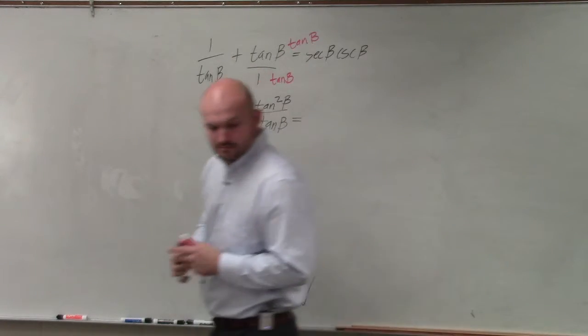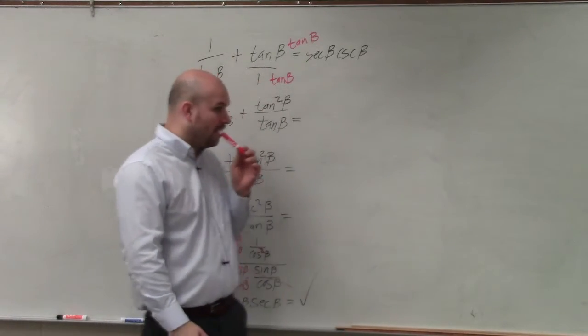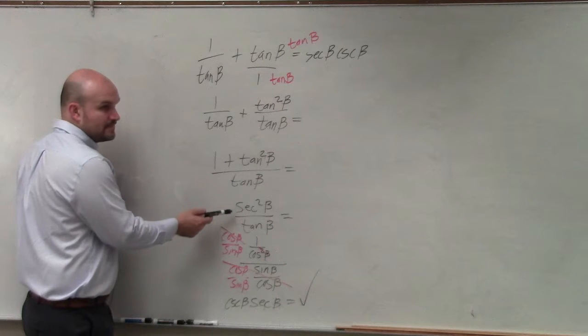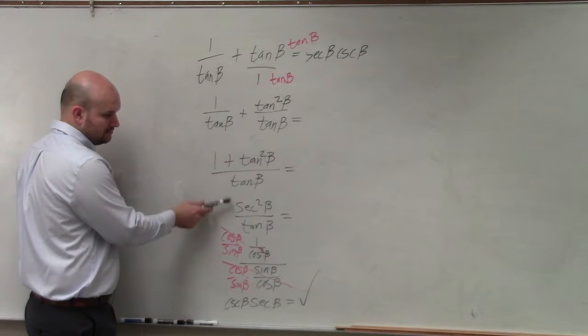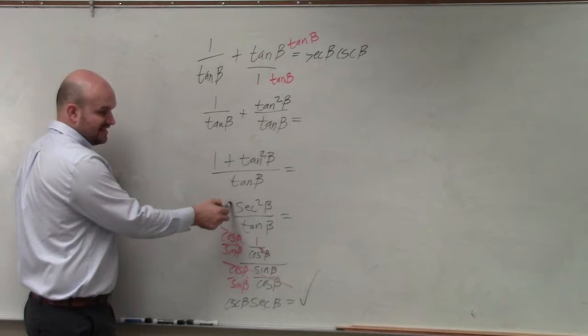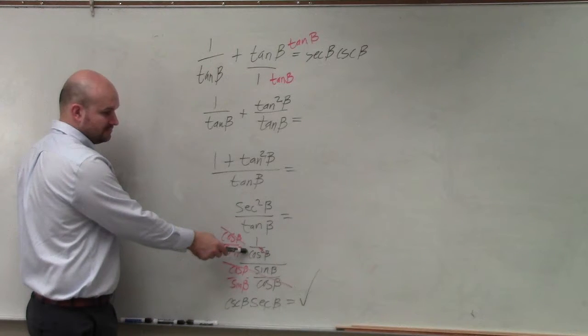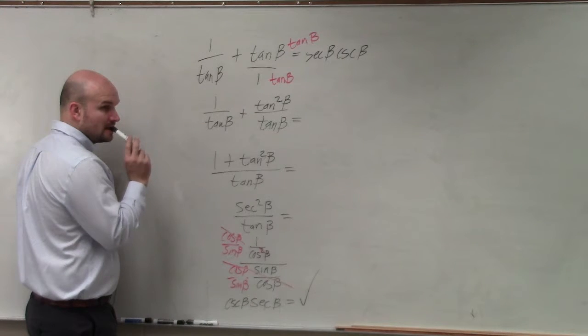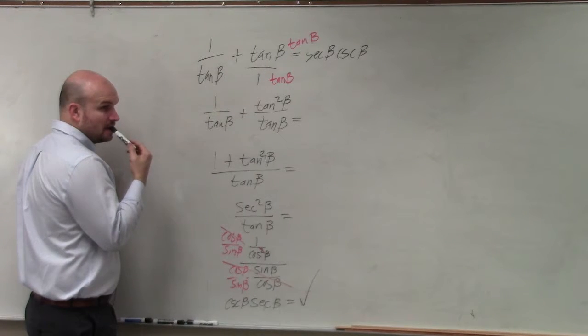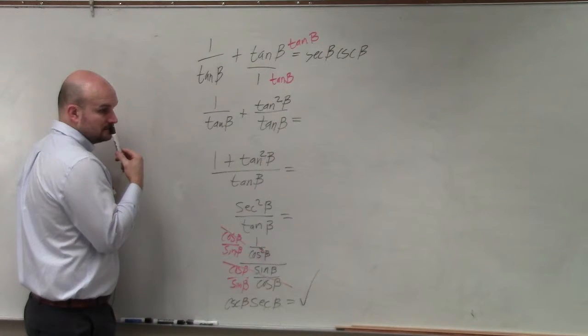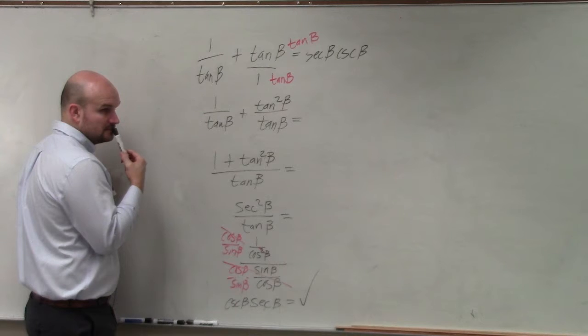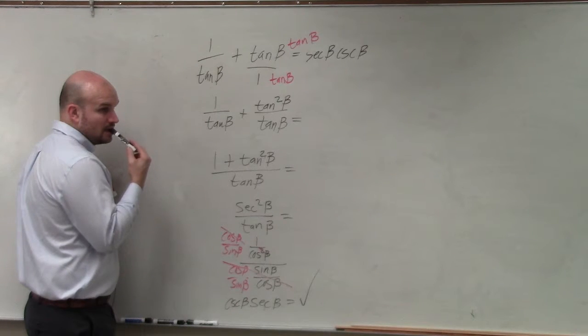Yes? So in that situation where you just said 1 over cosine squared. Yep. So I rewrote secant squared as 1 over cosine squared. So if you can change it, like here it's written as 1 over cosine, but if it is squared, it doesn't really matter, you can still write it that way. Because there's a reciprocal identity that says secant equals 1 over cosine.